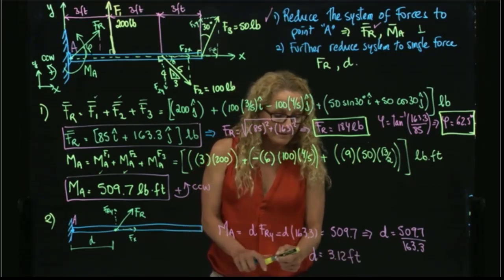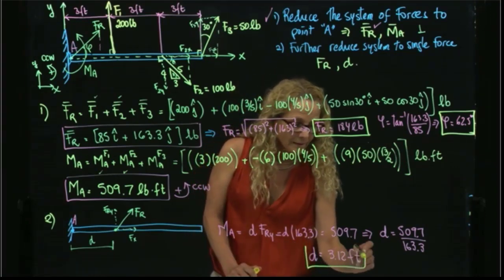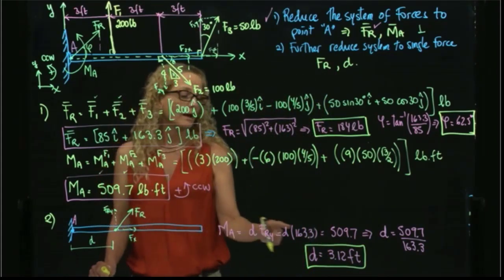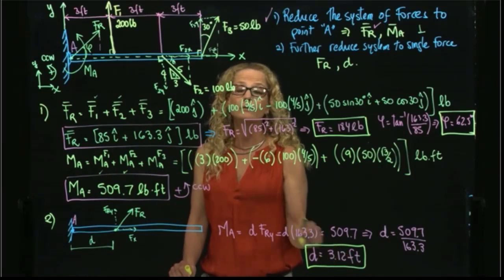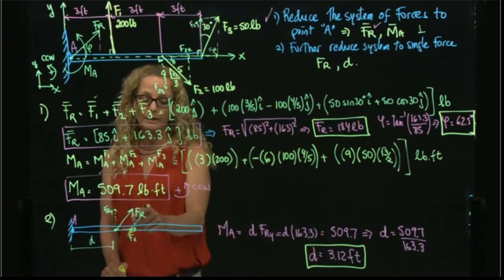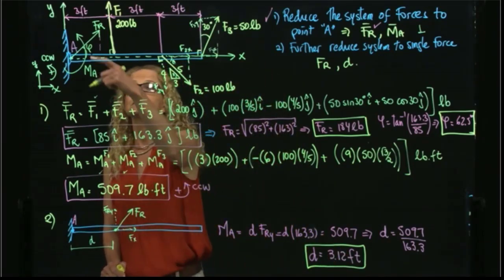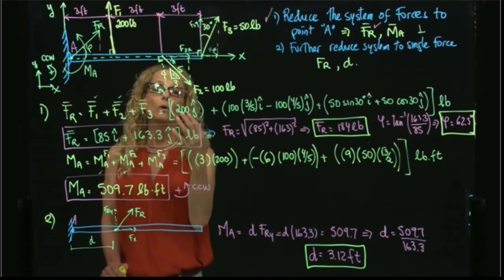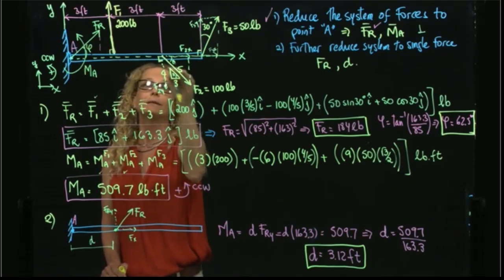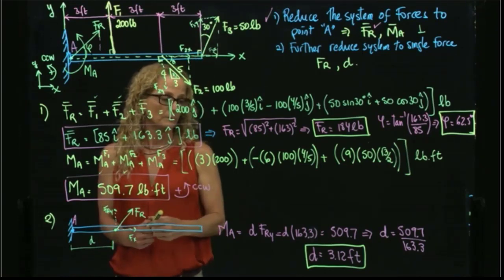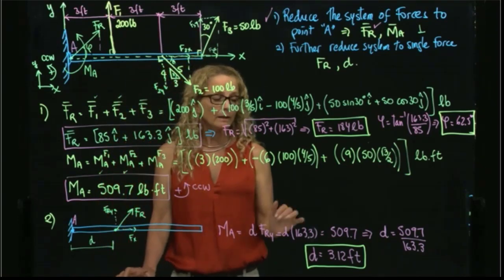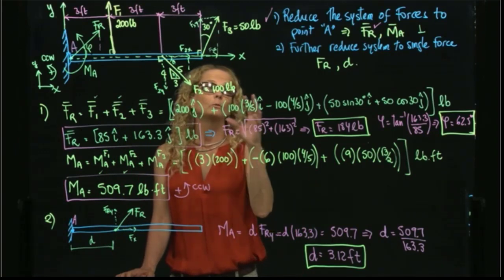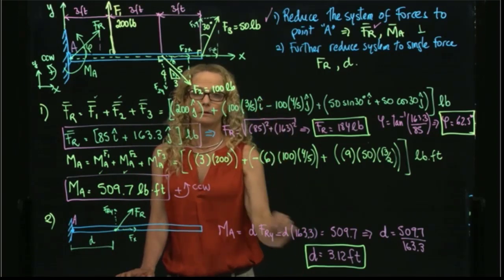The distance equals 509.7 divided by 163.3, which gives 3.12 feet. So if the resultant force is placed at a distance of 3.12 feet from A, it creates a system equivalent to the original three forces. That is how we further reduce the system to a single force.